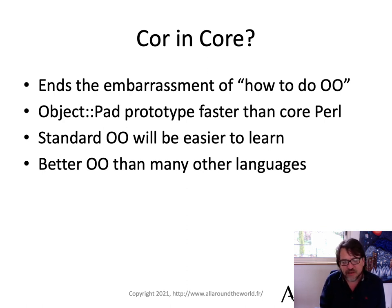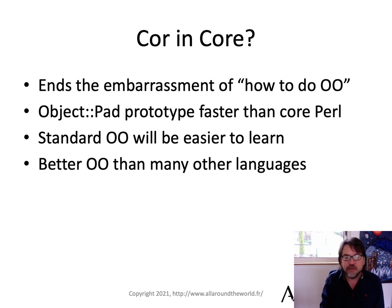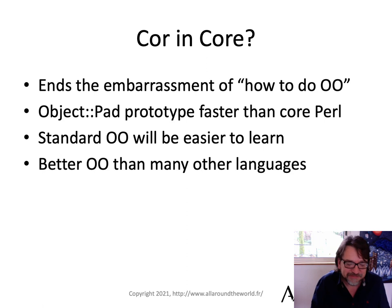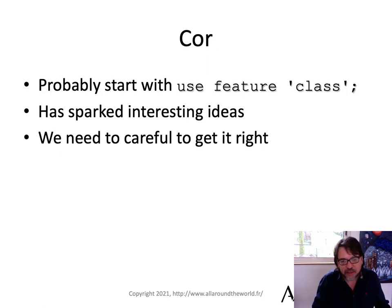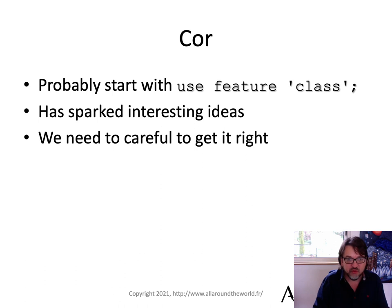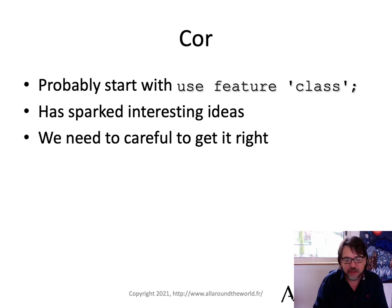Standard OO is going to be easy to learn, and it's going to be better than many other OO languages. I didn't even have the time to touch on roles in this talk — I wish I could have, but I don't have the time. We will probably start with the feature guard: 'use feature class.' It's sparked a lot of great ideas, and it's been really fascinating working with people trying to refine this and get it better and better. But we need to be careful to get it right.